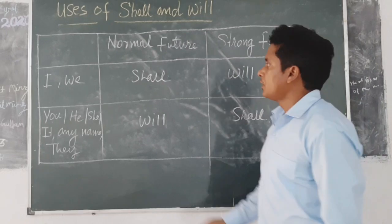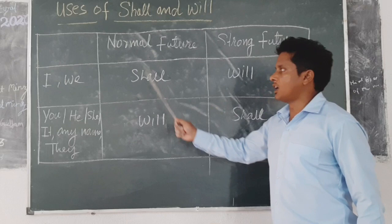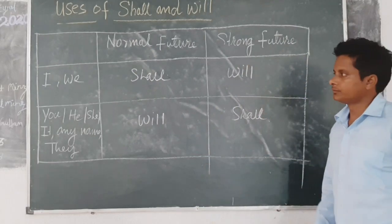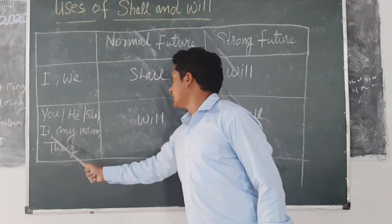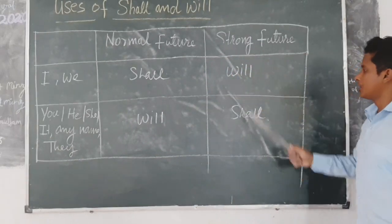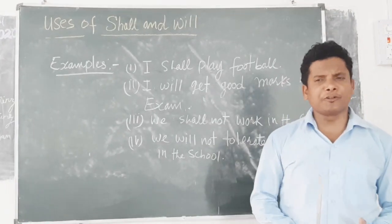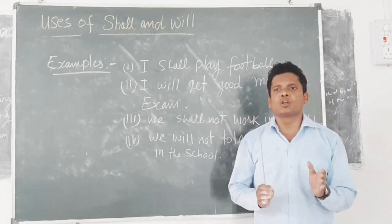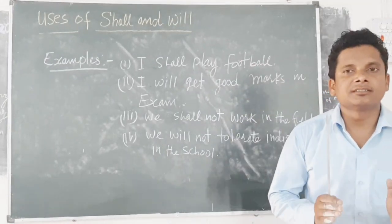Look at this type. With I and we, in normal future, we use shall. And in strong future, we use will. With you, he, she, it, any name, or they — in normal future, we use will. And in strong future, we use shall. The grammar rules for strong future: we reverse the use of shall. So now we are going to use will with the first person — I and we — and shall with the second and third person.